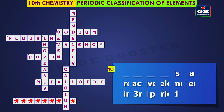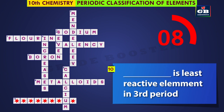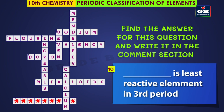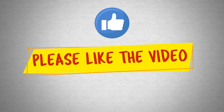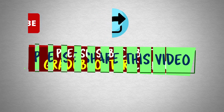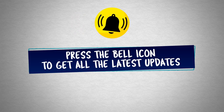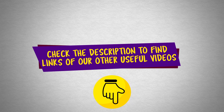Ten across: dash is the least reactive element in the third period. You try the answer for this question and complete the crossword puzzle. If you like this puzzle, please like it and share it with your friends. For more crossword puzzles, diagrams and MCQs, please subscribe to the channel Grade Booster and press the bell icon to get the latest updates. Check the description to find links of other useful videos.